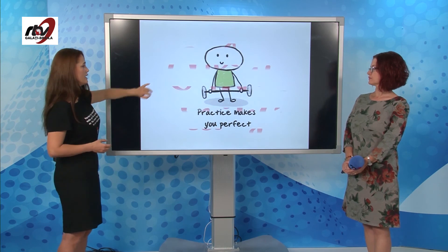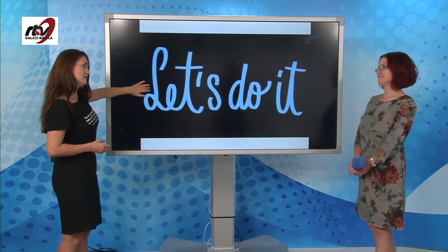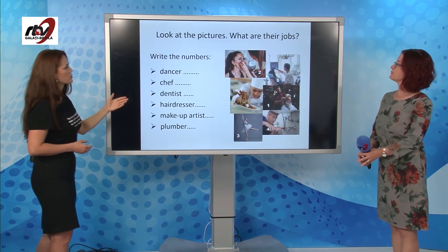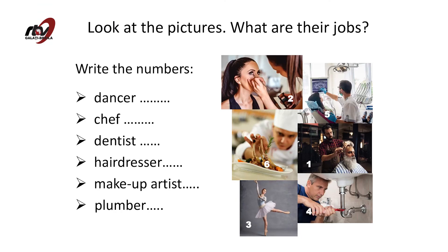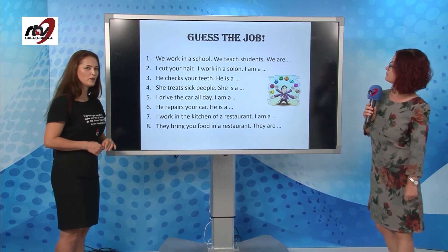Practice makes perfect. Now are you ready? Let's go! Look at the pictures — what are their jobs? Write the number. What number is dancer? Yes, you're right — it's number three. What about chef? You're right again — chef is number six. Good job. What about dentist? Number five. Excellent. What about hairdresser? It's number one. Good job, you are really good. Makeup artist — I'm sure you're right — it's number two. What about plumber? Yes, it's number four indeed.